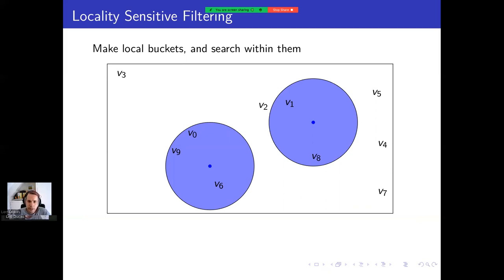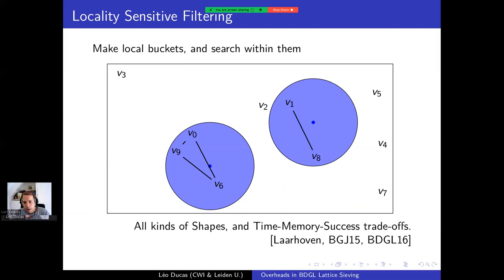So the BDGL lattice sieving algorithm is like many other papers at that period that try to tackle this quadratic factor. And it's also like all those other papers by resorting to locality sensitive hashing or more precisely here locality sensitive filtering where the strategy consists of constructing local buckets and only searching within those buckets. So here we for example constructed two blue buckets, the blue regions, and instead of looking for all pairs we only look at pairs inside those buckets. And for example the pair v0 and v9 they're close and luckily they fall in the same bucket. So it is going to be detected. The pair v1 and v2 we've been less lucky. It crosses the border of the bucket so we're missing this one.